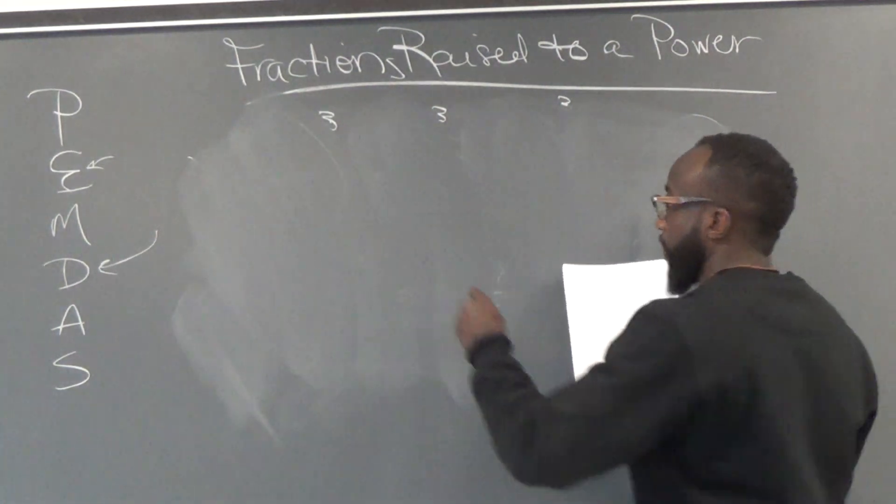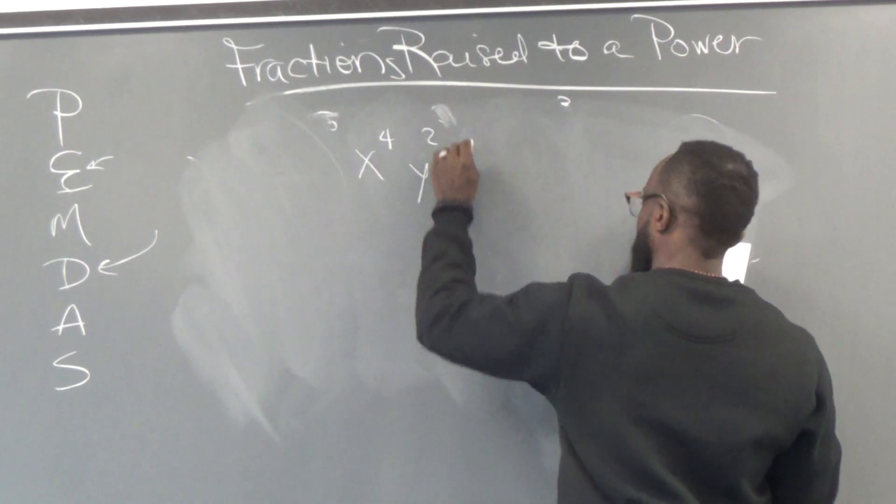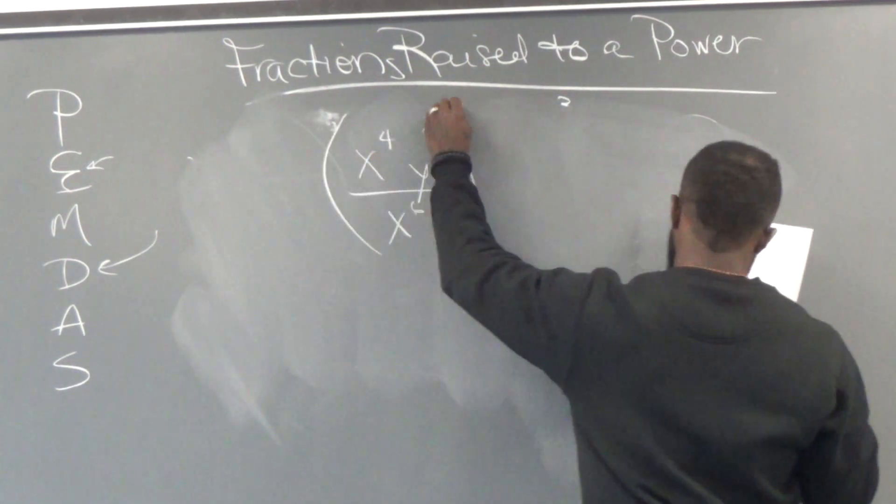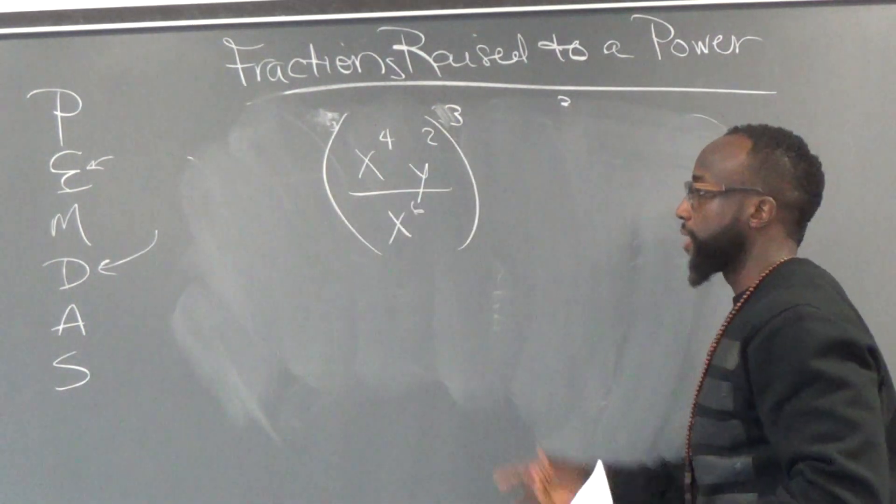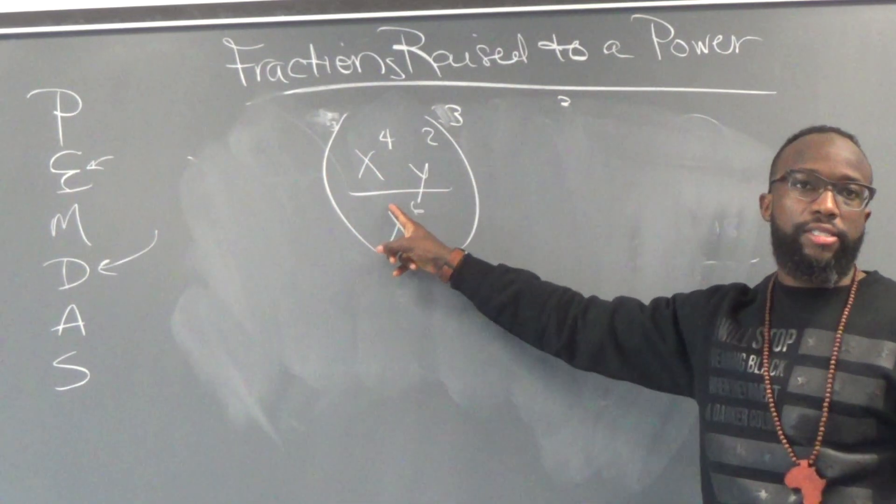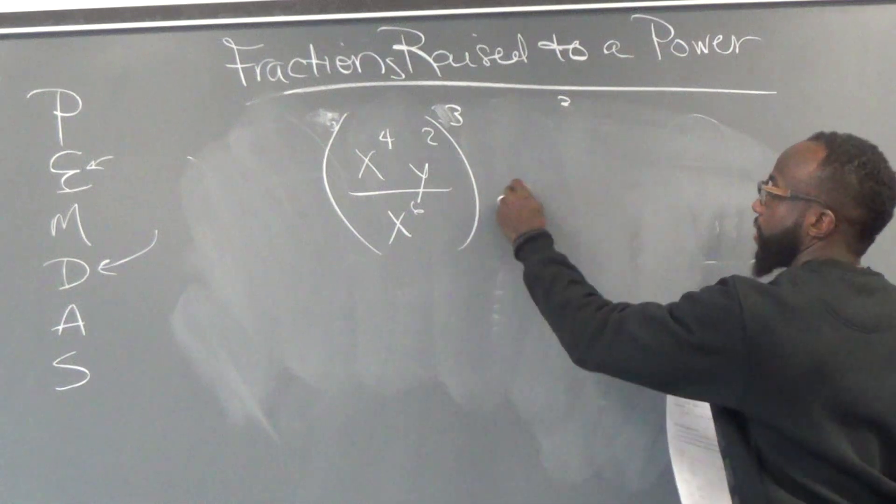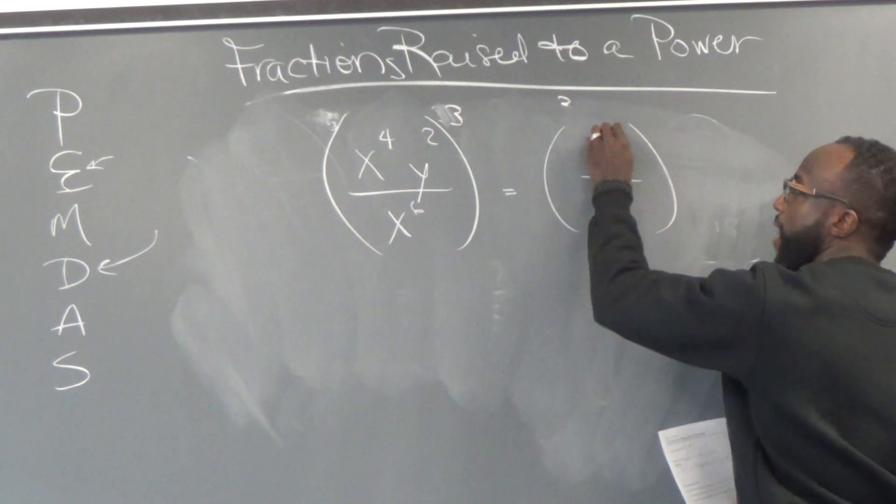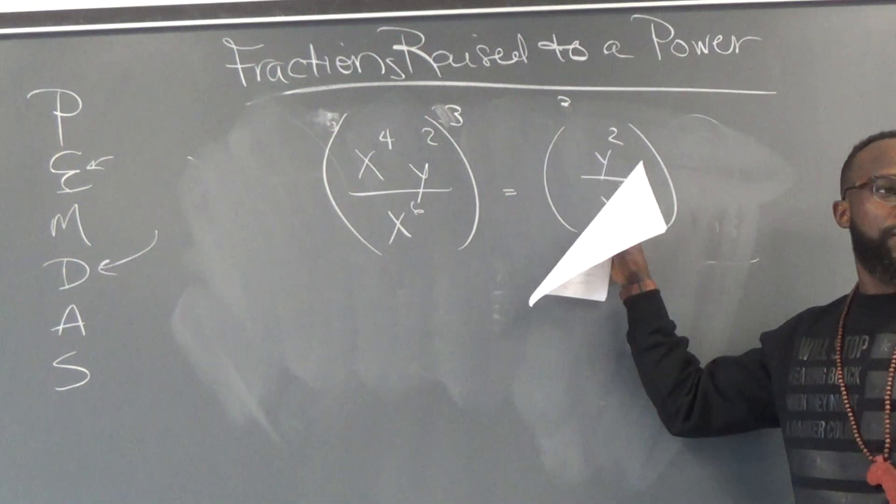Let's do number 3 because this is pretty much the skill. So x to the 4, y to the 7, over x to the 6, all raised to the 3rd power. First thing you can do is simplify inside parentheses. You got x's here. So like yesterday, we had x to the 4th and x to the 6th. Which number is the biggest? Which one has the biggest exponent? The denominator. So if we simplify this, 4 minus 6. So we're going to keep y at the top and we're going to keep x at the bottom.